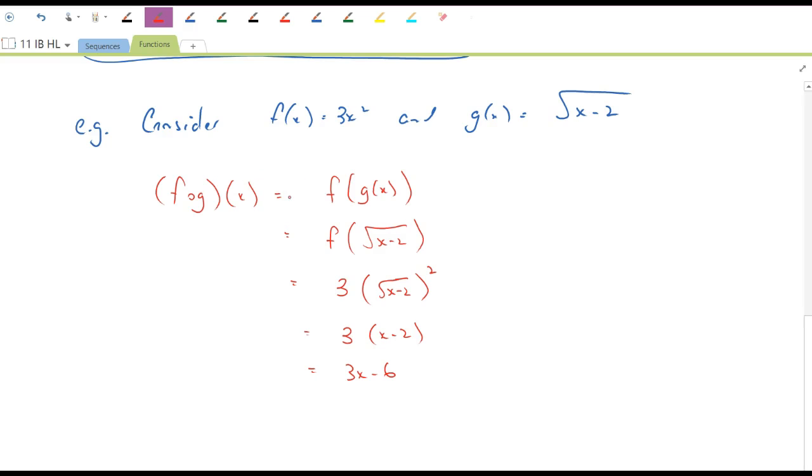So if we wanted to spin it around the other way, we could find g of f(x), which we define as g of f(x). So we take the f function, 3x squared, and apply it to the g function. So we're now looking for the square root of 3x squared minus 2. So there's my g function.